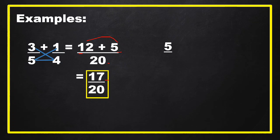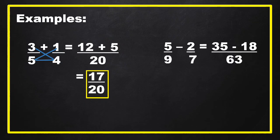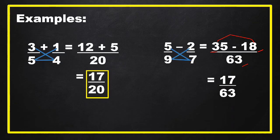Another example: 5 ninths minus 2 sevenths. Again, different denominators, so we use the cross-product method. Multiply 5 times 7 to get 35, and 9 times 2 to get 18, and 9 times 7 to get 63. Subtract the numerators: 35 minus 18 equals 17, then copy the denominator 63. Our final answer is 17 over 63.